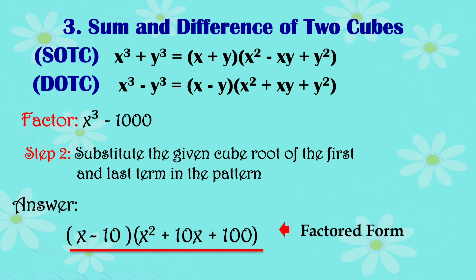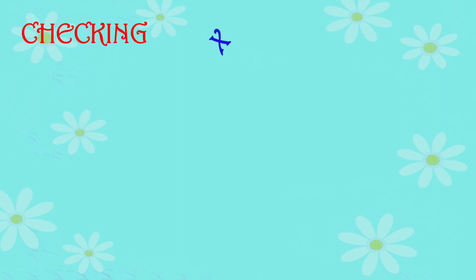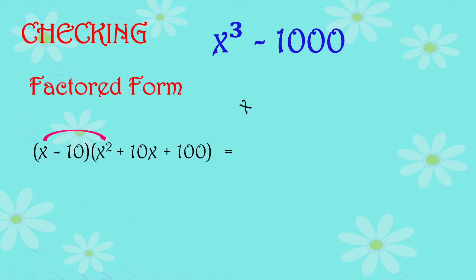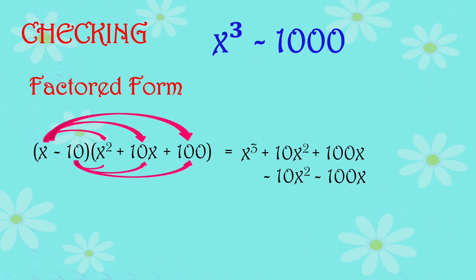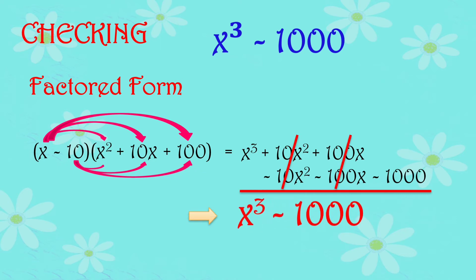Key rule: when the given expression is a sum of cubes (positive), the middle term of the trinomial factor is negative. When the given expression is a difference of cubes (minus), the trinomial is all positive. Multiply the first and last terms to get the middle term. Checking by multiplying back and canceling zero terms gives us x cubed minus 1000.